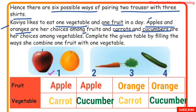Day 1: fruit - apple, vegetable - carrot. Day 2: fruit - apple, vegetable - cucumber. Day 3: fruit - orange, vegetable - carrot. Day 4: fruit - orange, vegetable - cucumber. This gives 4 ways to combine fruits and vegetables.